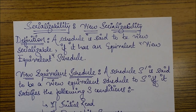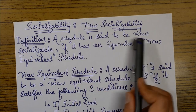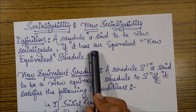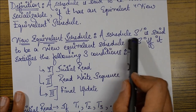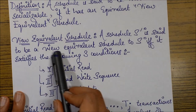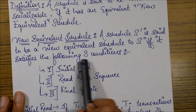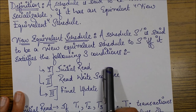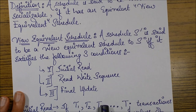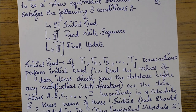A schedule is said to be view serializable if it has an equivalent view equivalent schedule. A schedule S' is said to be view equivalent to S if and only if it satisfies the following three conditions: initial read, read-write sequence, and final update.